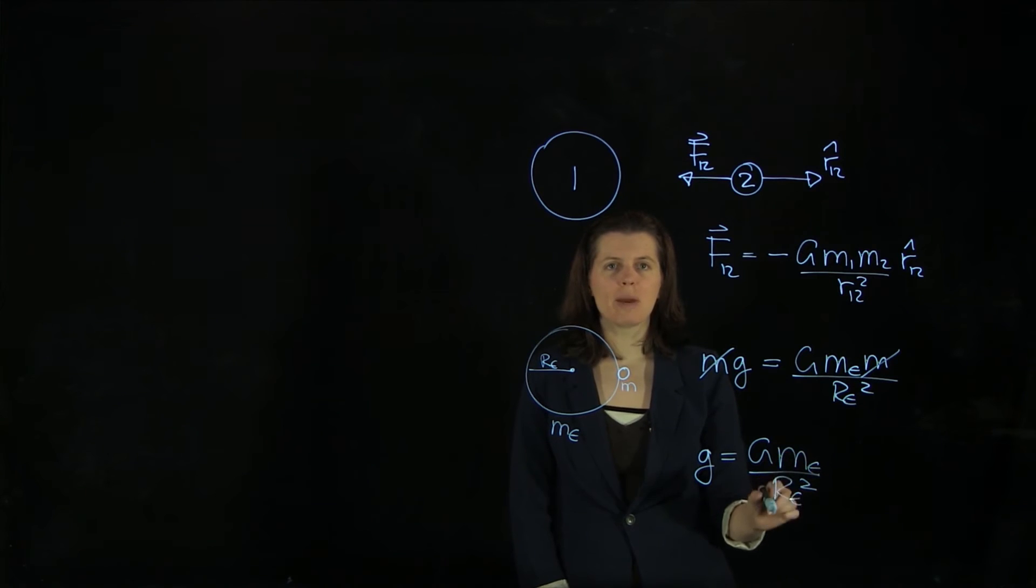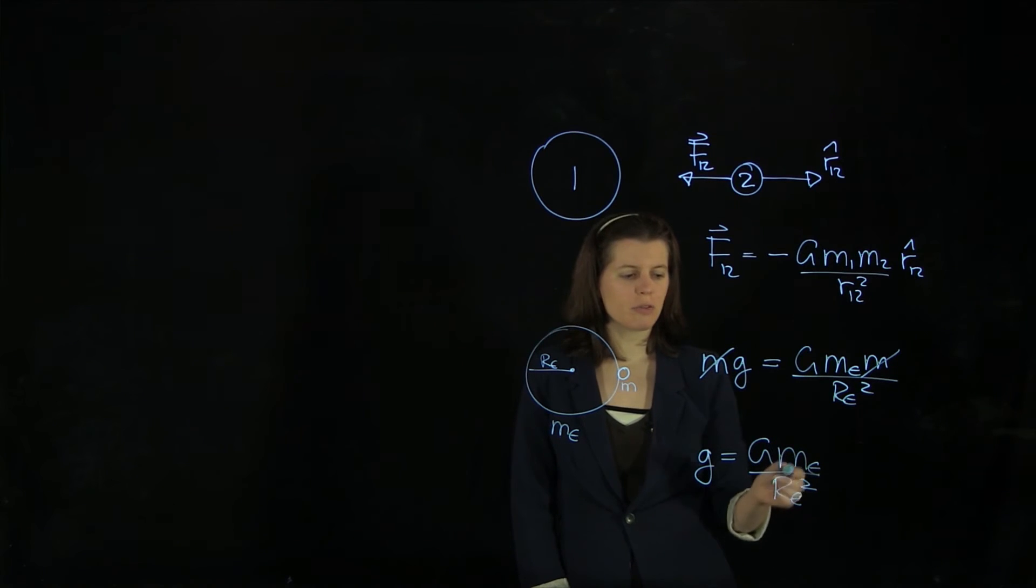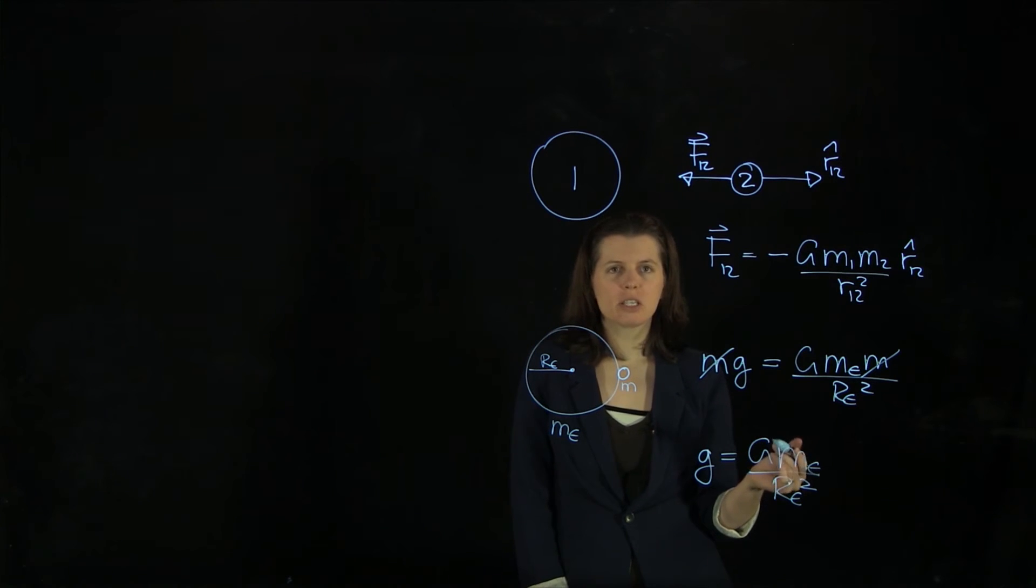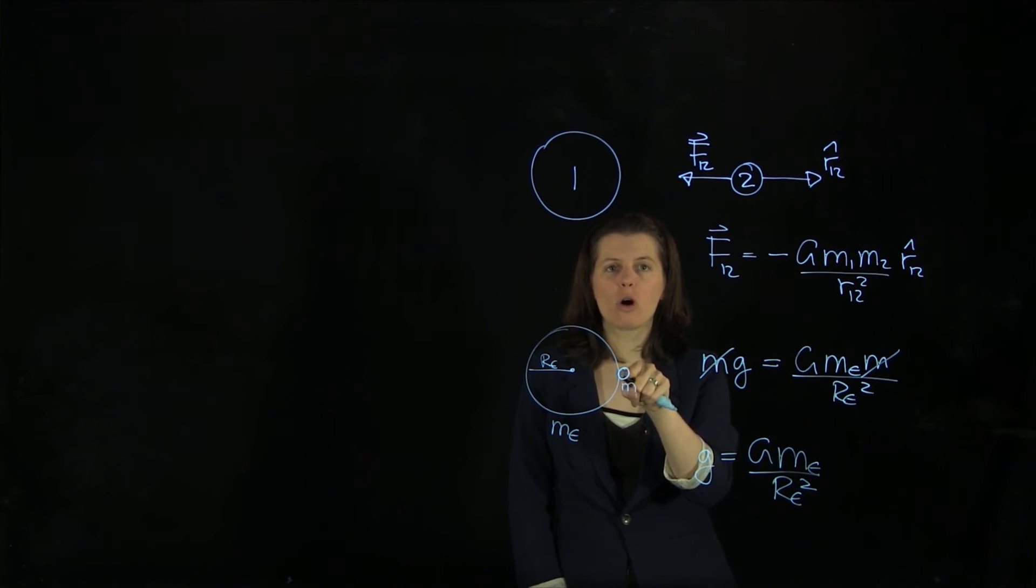So if we have this kind of information, we can determine the gravitational acceleration. And of course, it will change depending on which object we are considering. It would be different if we plug in the solar mass and the solar radius, or the moon mass and the moon radius, if we consider an astronaut standing here on the moon surface.